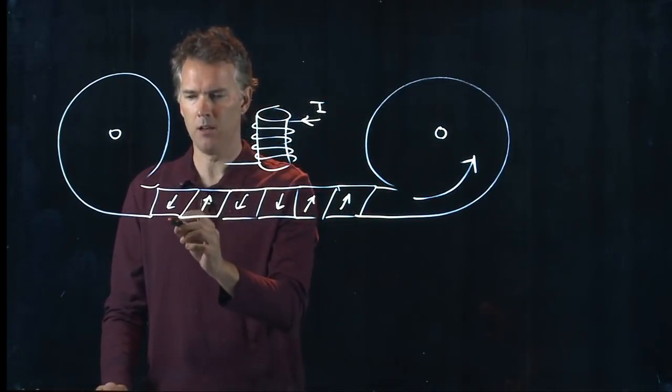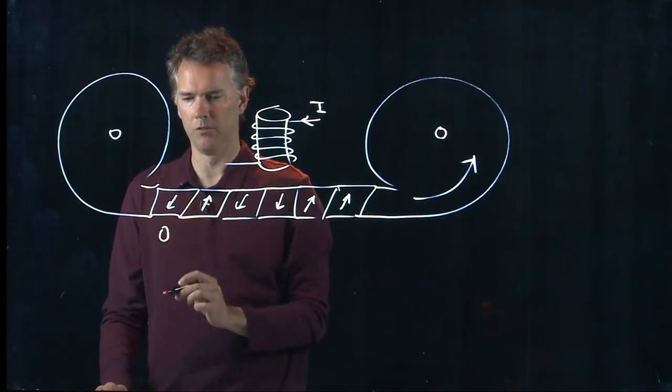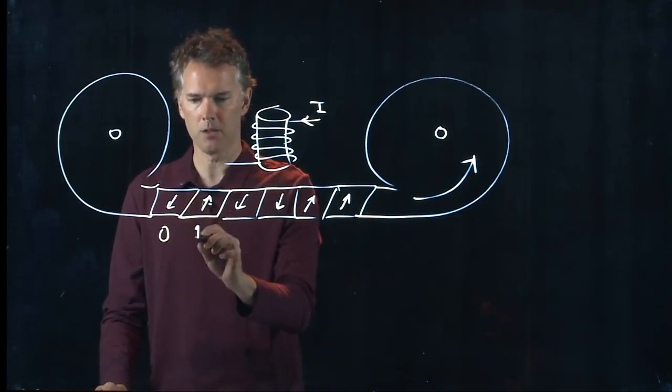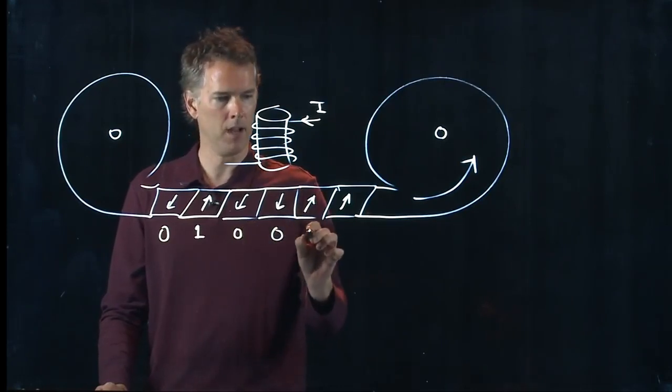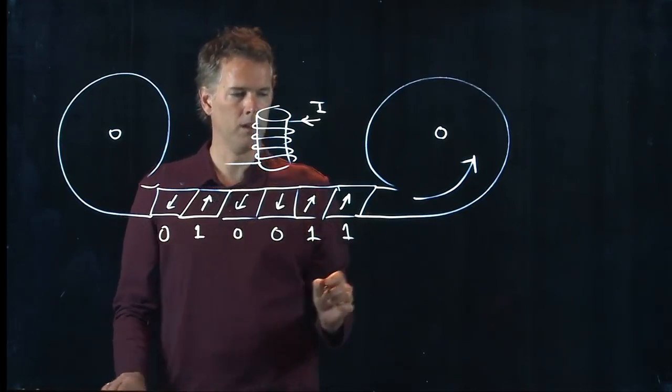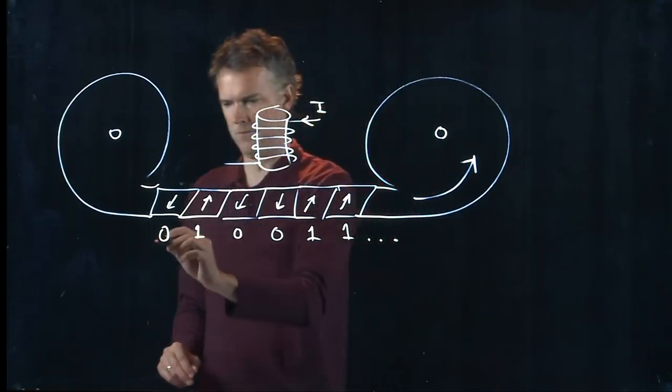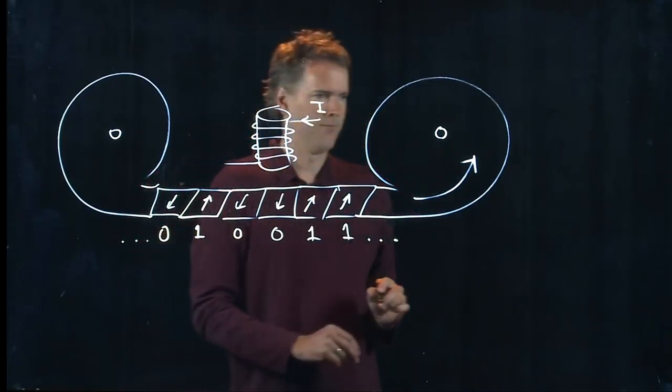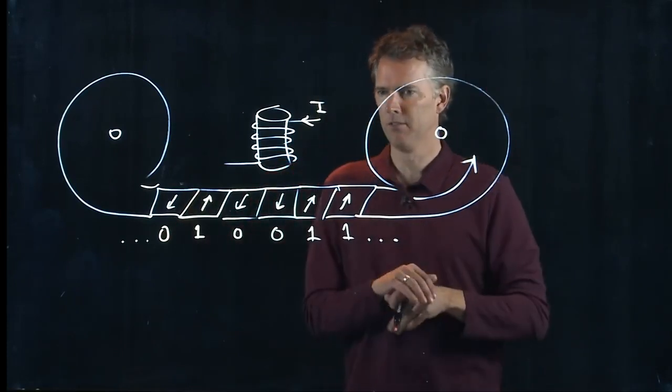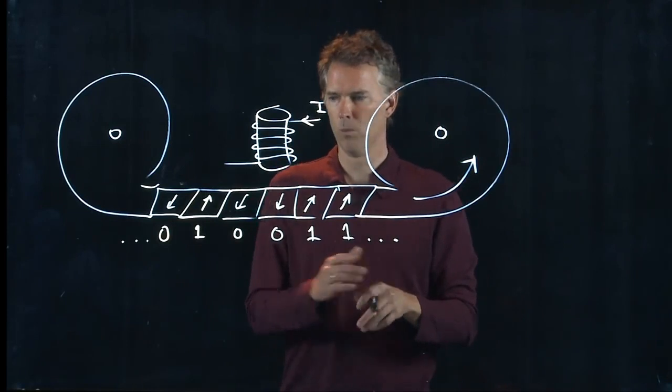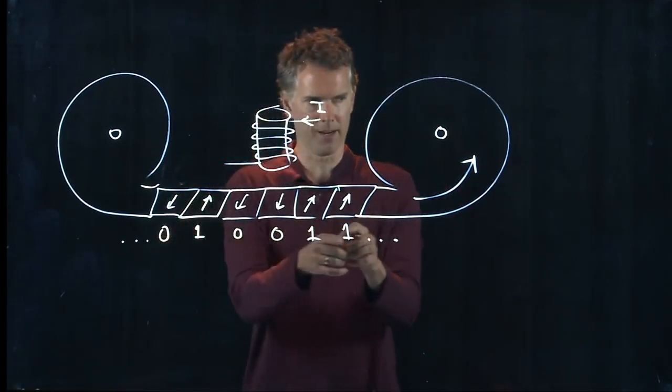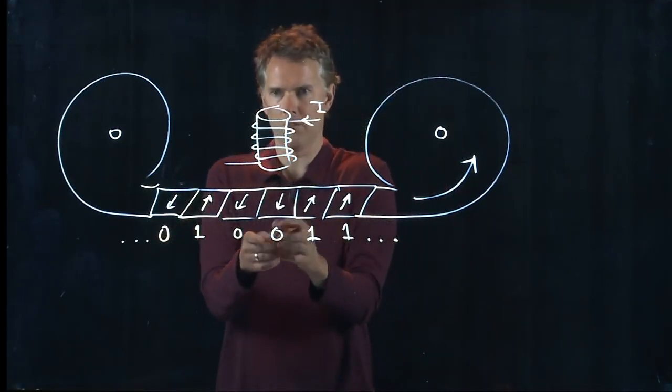Aha! What if we just said this direction was a zero and this direction is a one. And this is a zero and this is a zero and that's a one and that's a one and so on and so on. Anybody know what type of device this is? When you see this, a string of zeros and ones, what do you think of?